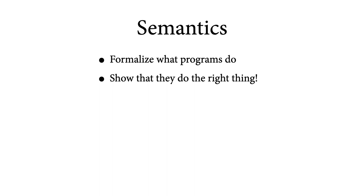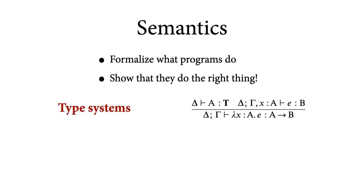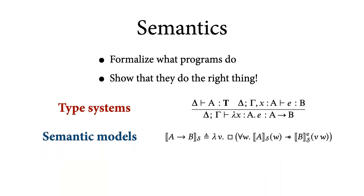Concretely, we'll be looking at a series of programming languages with increasingly complicated type systems, since types and type systems are arguably the most widespread kind of formal methods in existence. We'll show how to build semantic models of these type systems in order to prove interesting theorems about them — for example, showing that all well-typed programs are safe to execute or that all well-typed programs terminate.